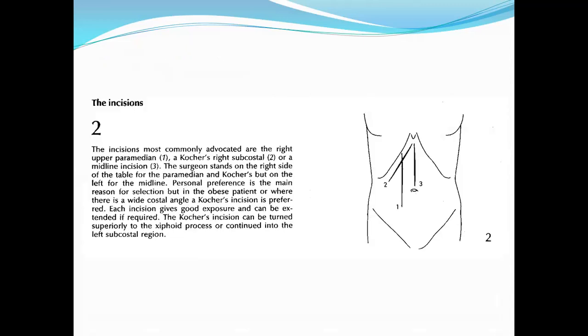The most commonly used incision is the Kocher, the right subcostal incision. The other incisions that can be used are upper right paramedian or midline incision. The surgeon stands on the right side of the table for the paramedian and Kocher incision, but on the left for the midline incision. Personal preference is the main reason for selection, but in the obese patient or where there is a wide costal angle, the Kocher incision is preferred. Each incision gives good exposure and can be extended if required. The Kocher incision can be turned superiorly to the xiphoid process or continued into the left subcostal region.